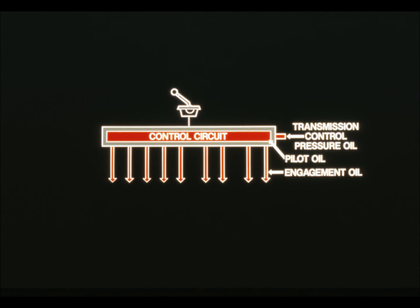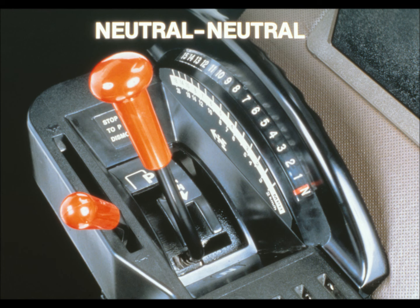Before getting into the control circuit valves, there are some terms we should define. When we talk about control circuit oil, there are three different types. Transmission control pressure oil is oil that comes from the transmission pump and transmission filter; it's regulated to 175 PSI or 1200 kilopascals by a pressure regulating valve located in another housing. Engagement oil is oil that actually operates the clutches and brakes in the transmission. Pilot oil is oil that operates valves in the control circuit.